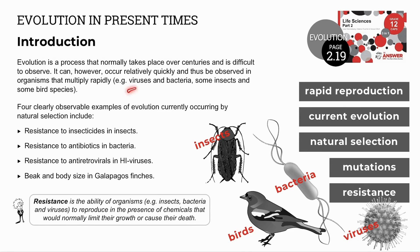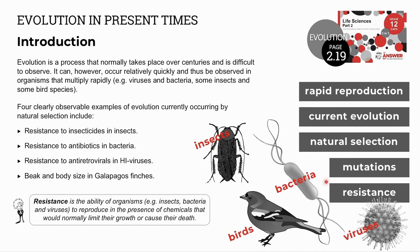For example, viruses, bacteria, some insects and some bird species can reproduce very quickly. Rapid cell division increases the chances of mutations occurring. As the environment changes — whether it's introducing insecticides or introducing antibiotics — some mutations may occur that are beneficial and provide resistance to increase the chances of survival.